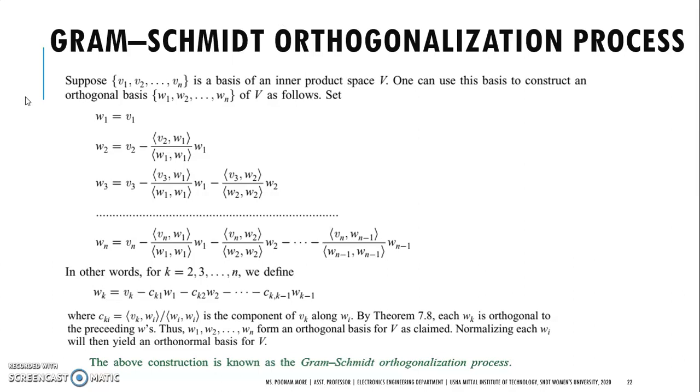The steps are as follows: First, the orthogonal basis W₁ can be set equal to the given basis V₁. Then the next orthogonal basis can be evaluated by calculating this term in terms of the next non-orthogonal basis V₂ and the calculated orthogonal basis W₁.